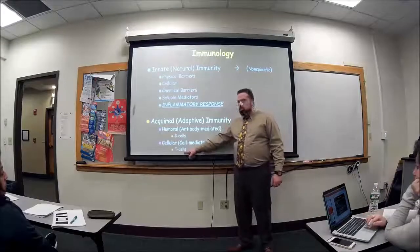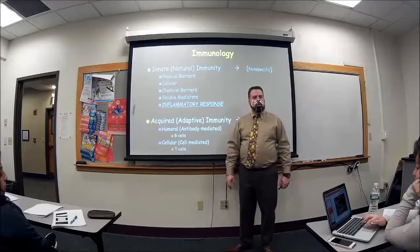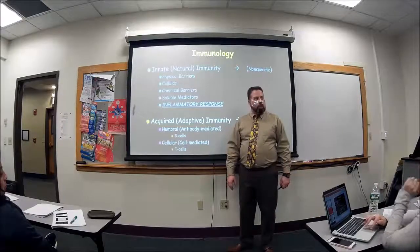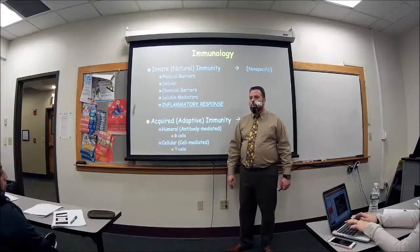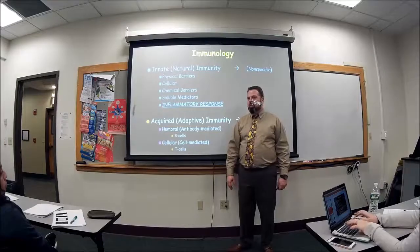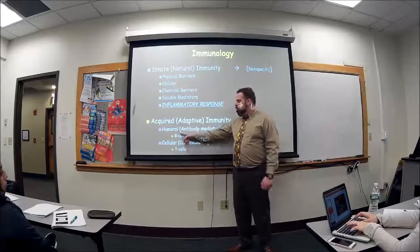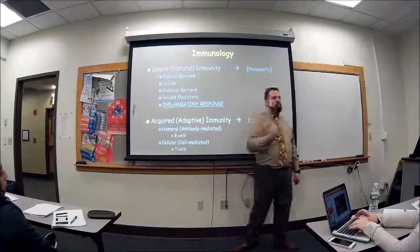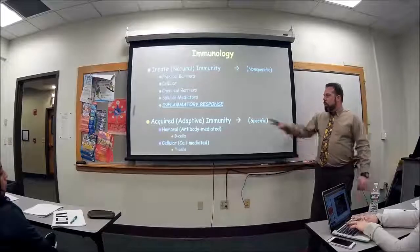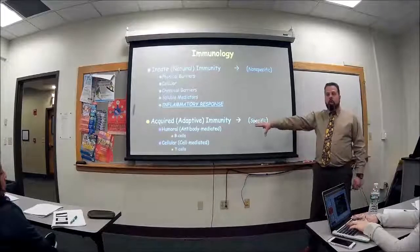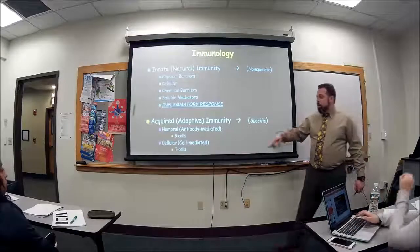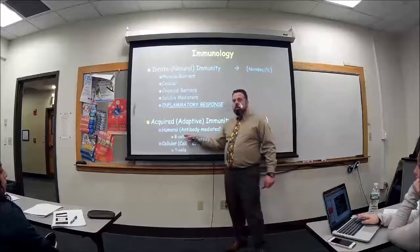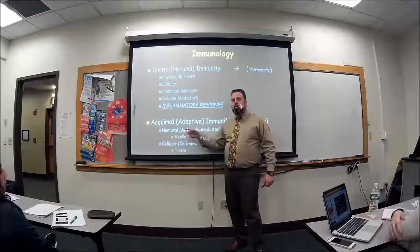T cells mature where? Thymus — good. B cells mature where? Bone marrow — bingo. So the B and the T come from bone marrow and thymus. They all come from the bone marrow, but T cells mature in the thymus and B cells mature in the bone marrow.